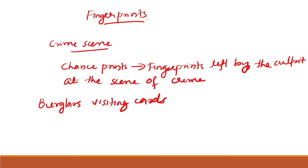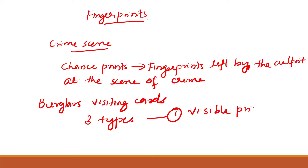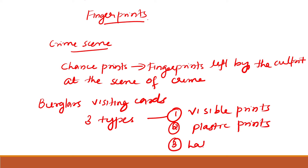Chance prints can be classified into three main classes: the first one is visible prints, the second one is plastic prints, and the third one is latent prints.